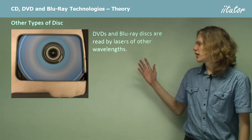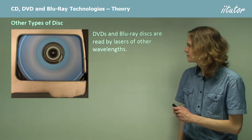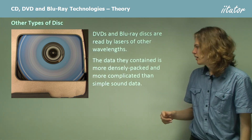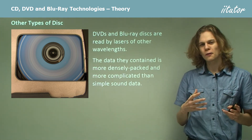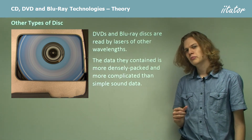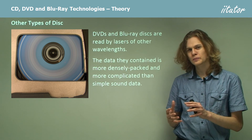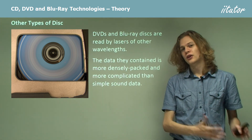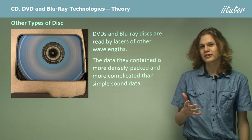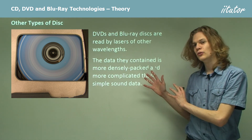DVDs and Blu-ray discs are read by lasers of different wavelengths, roughly matching the wavelengths used to burn the data originally. The data they contain is much more densely packed because smaller pits and not-pits are used, and they tend to encode video as well, which is much bulkier than sound data. When encoding a movie at about 25 frames per second, each frame contains thousands of pixels and each pixel is a certain number of bytes — so every second of video takes up a large number of bytes, requiring clever ways to pack it all in.